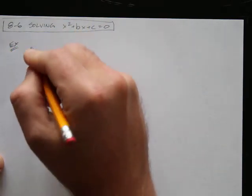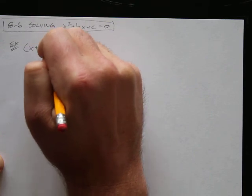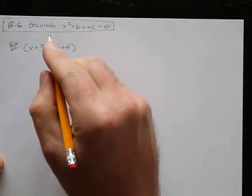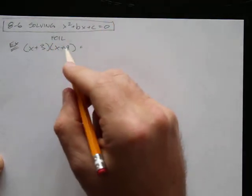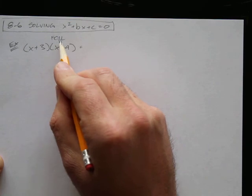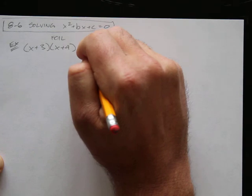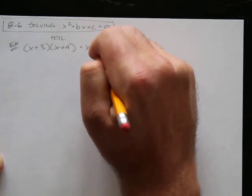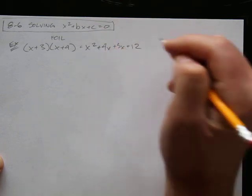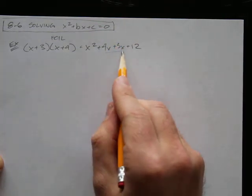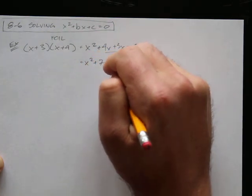Here is our example. Remember FOIL — if we had x plus 3 times x plus 4, we would multiply first, outside, inside, last. We'd end up with x squared plus 4x plus 3x plus 12. We combine like terms to get x squared plus 7x plus 12.